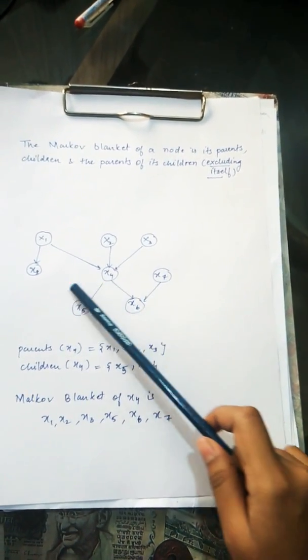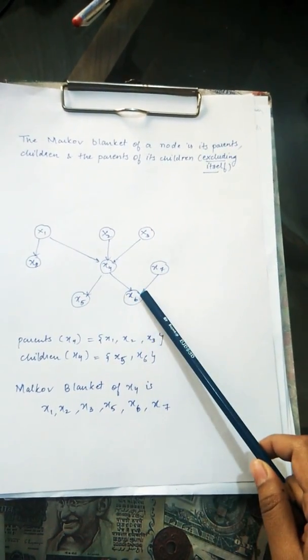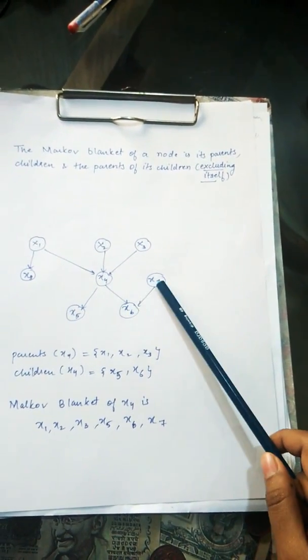So the Markov blanket consists of all the parents and the children of the node, excluding itself and the parents of its children.